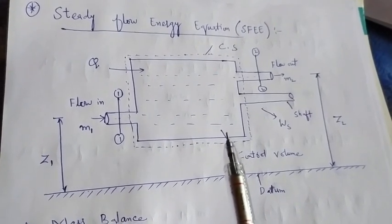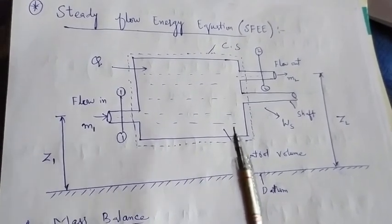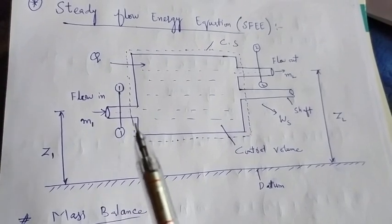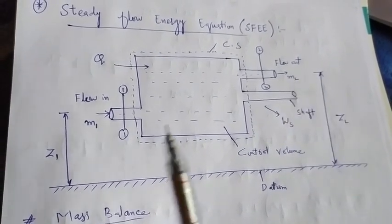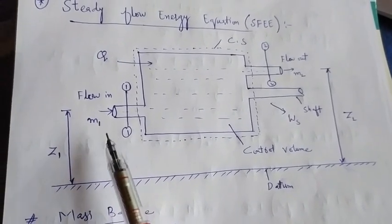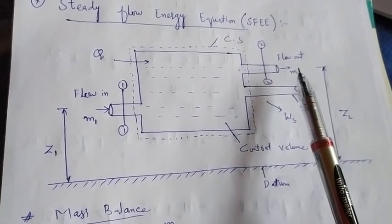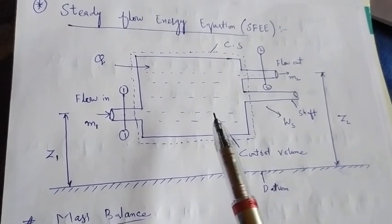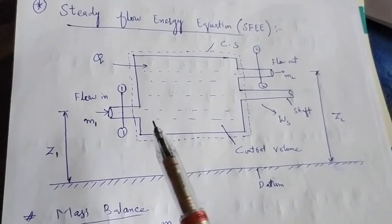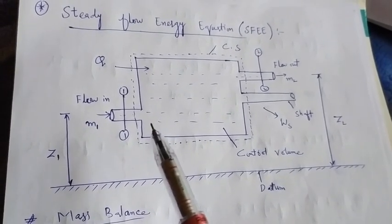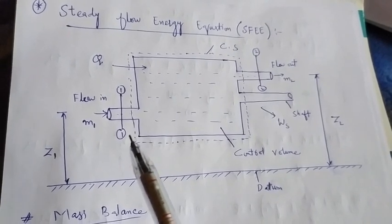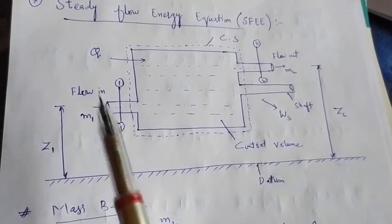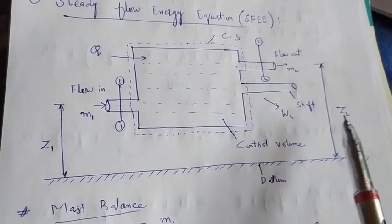If you recall this figure we had already drawn in the classroom — it was a control volume with a single stream of fluid flowing into the system and that same stream flowing out of the system. M1 is the mass flow rate at the entrance and M2 is the mass flow rate at the exit, with two sections: section 1 and section 2. We defined different quantities: area of cross-section, specific volume, mass flow rate, and internal energy at the entrance and outlet. There is a datum or reference standard, and the height of the inlet cross-section is Z1 and the outlet is Z2 from the datum.